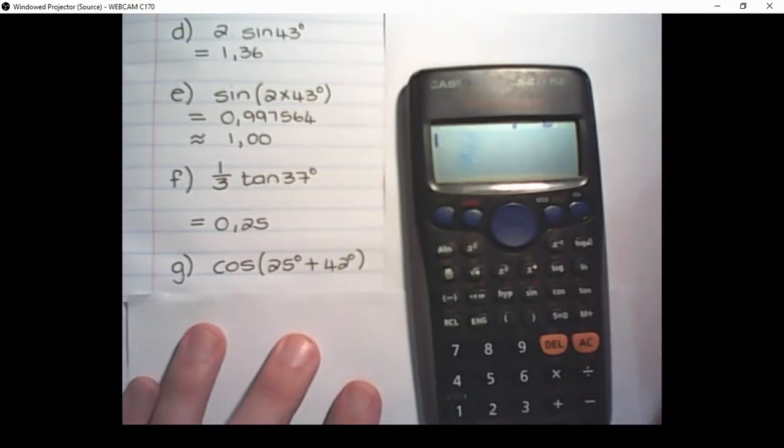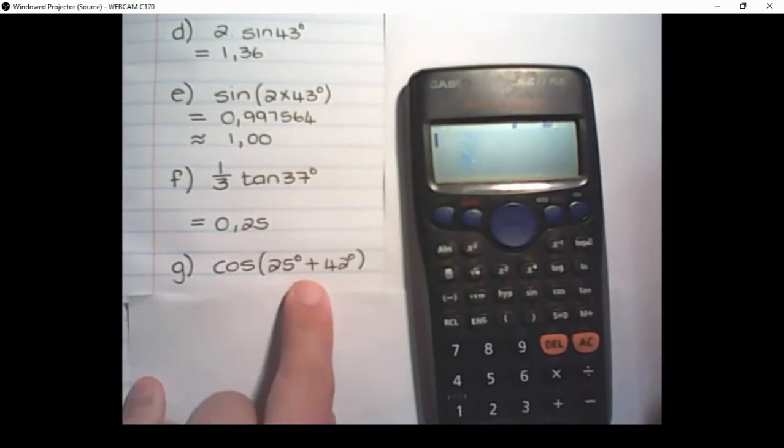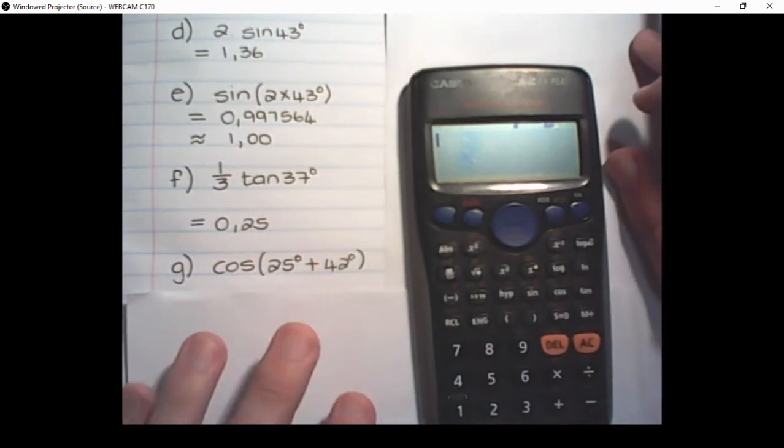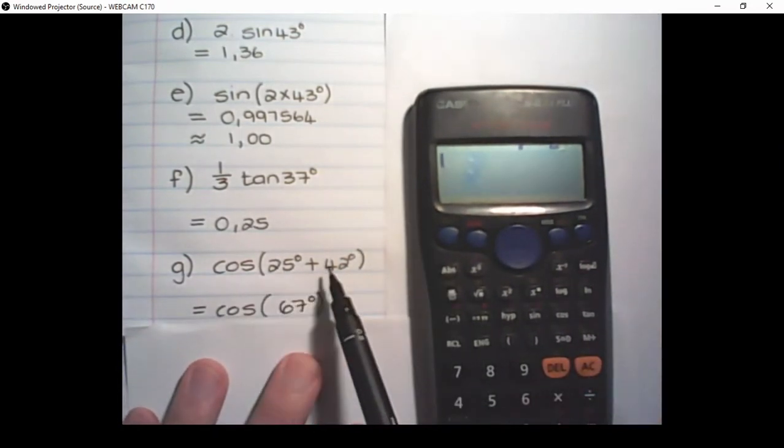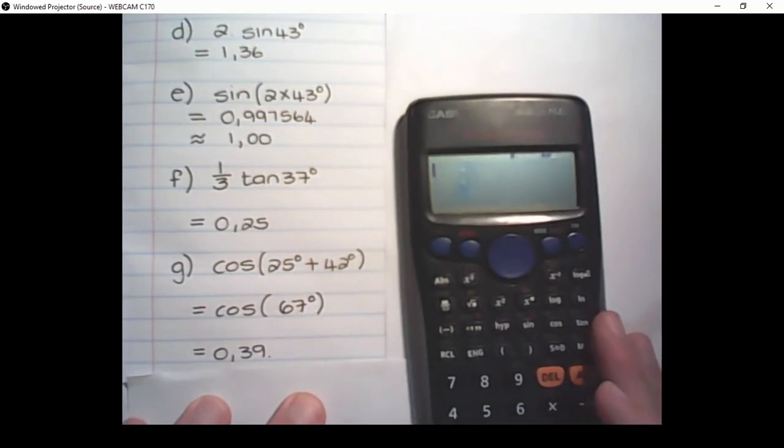We can also have instances where we need to add up the angles. You can either put this in on your calculator directly or you can choose to add up 25 and 42. So to show you how to do it on a calculator, it's cos 25 plus 42. And remember to close the bracket.